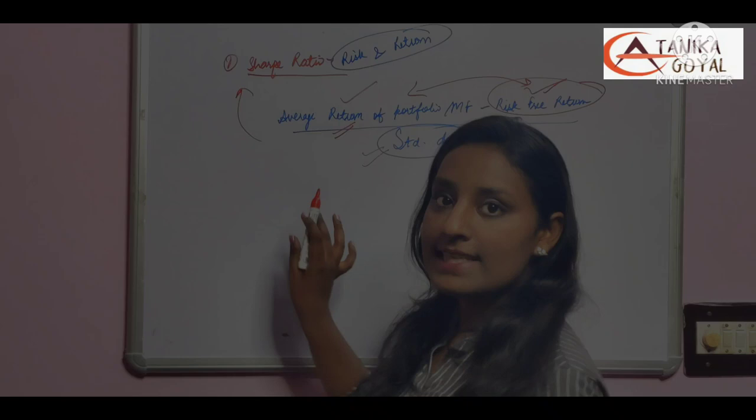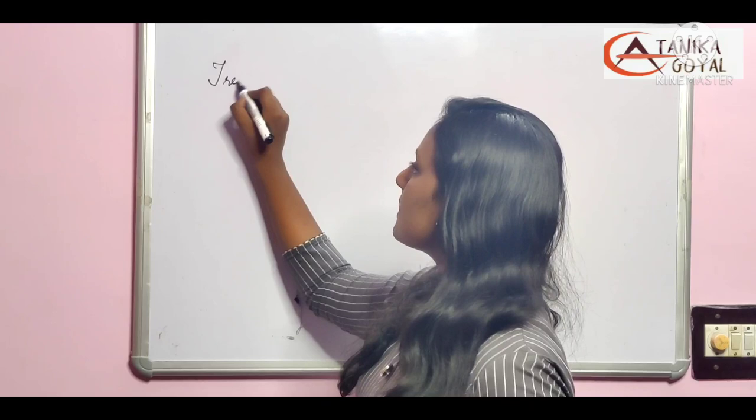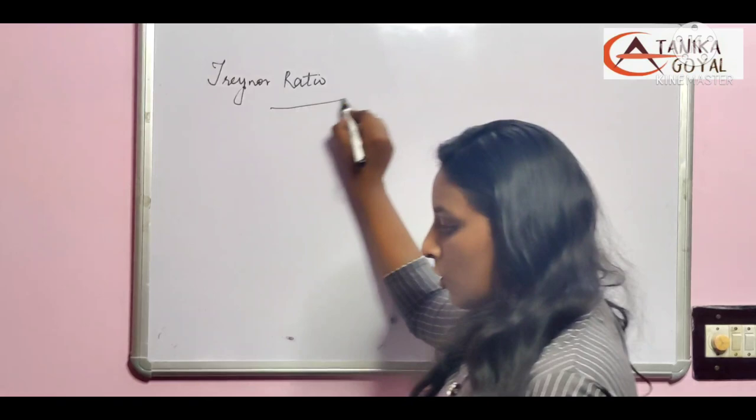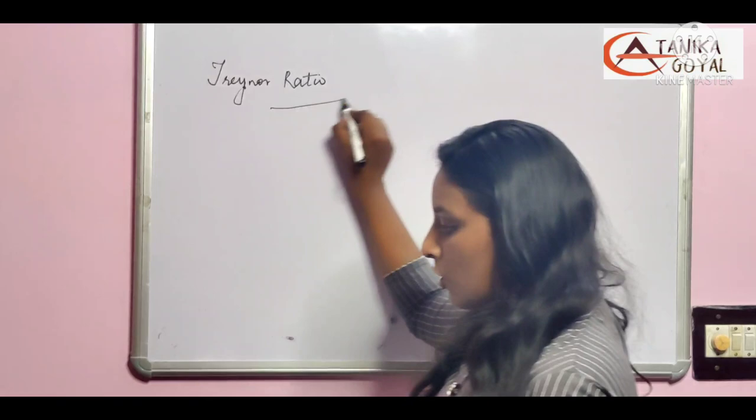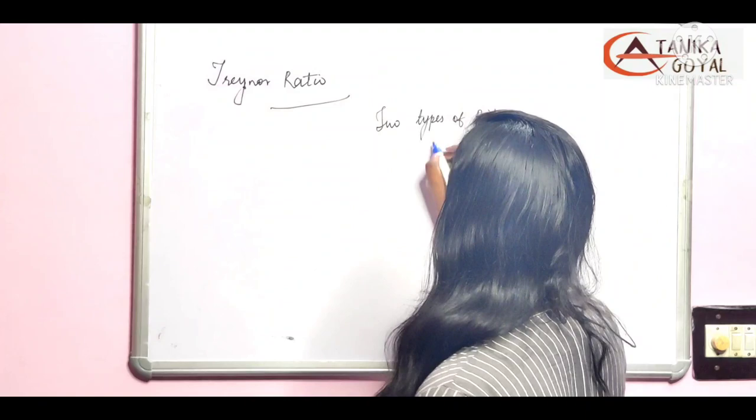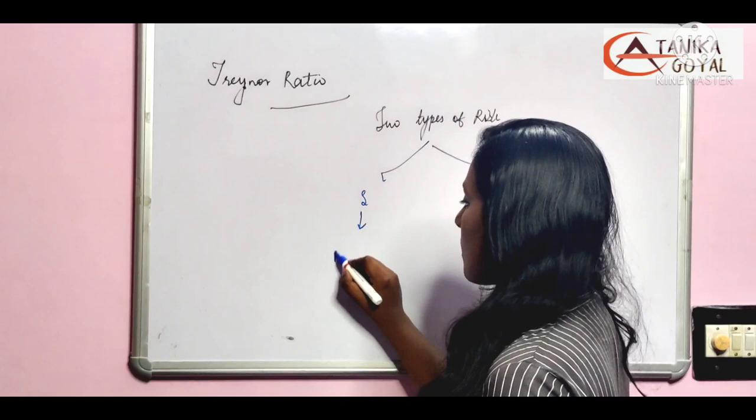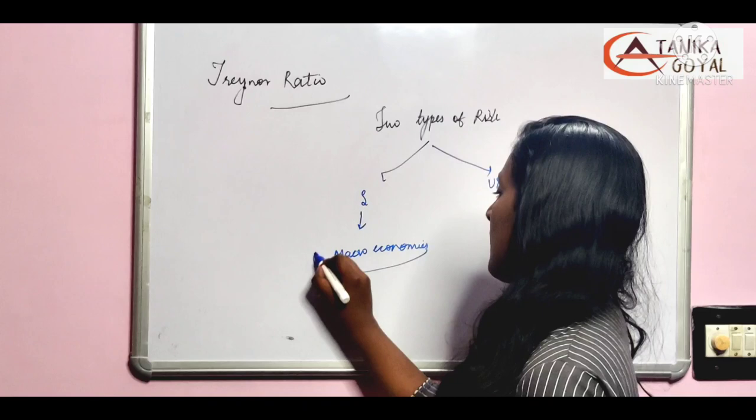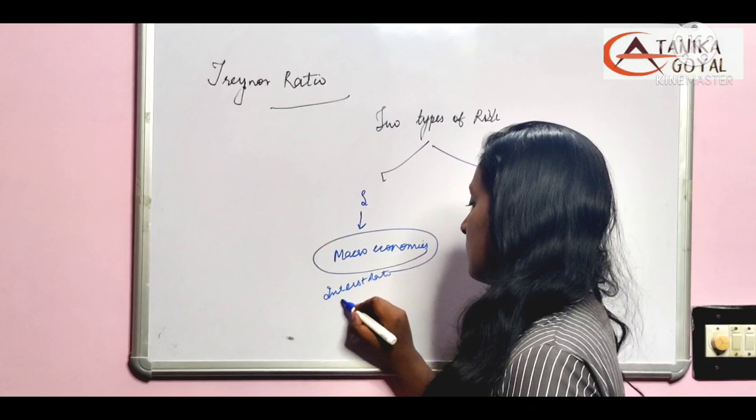Next, what is the Treynor ratio? What is the same as Sharpe ratio? One is called systematic risk and one is called unsystematic risk. Systematic risk is based on the macroeconomic factors, and those factors that are not in our hands, like interest rate or inflation, these factors. Then we have unsystematic risk.